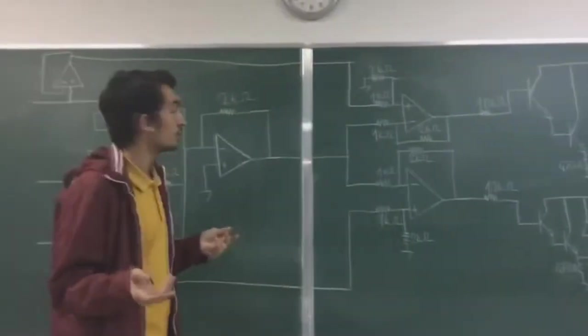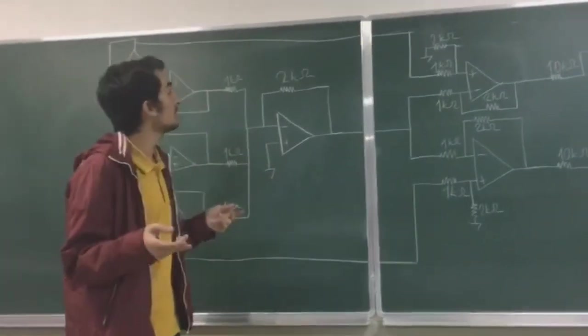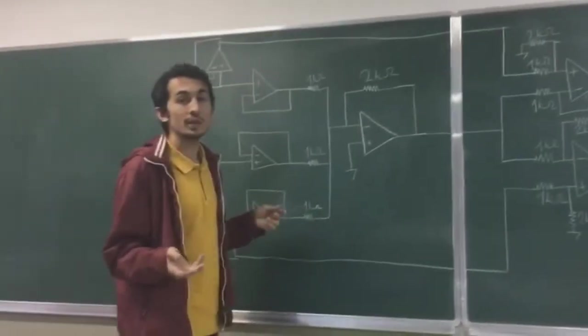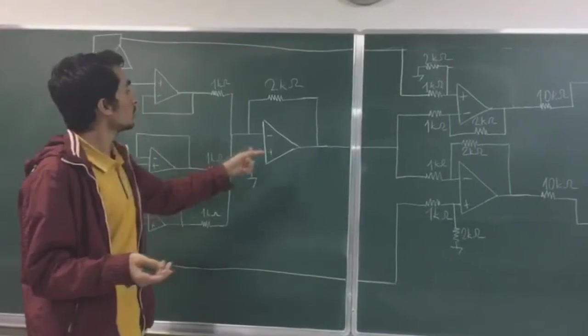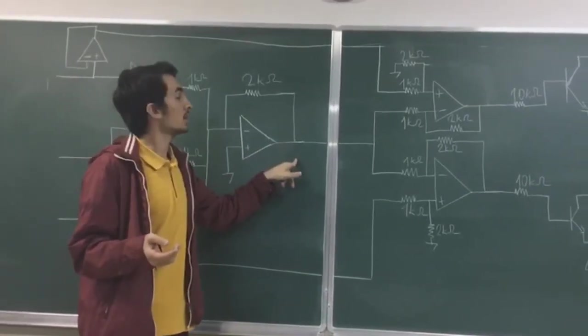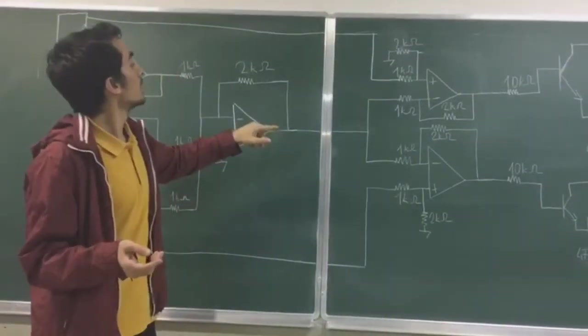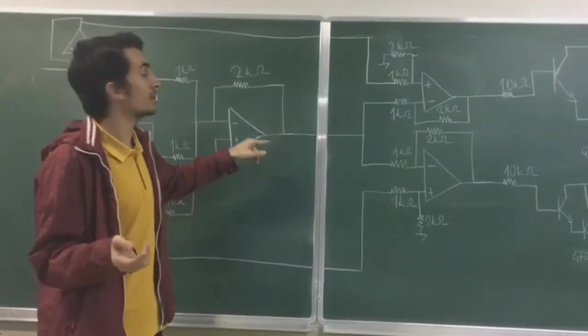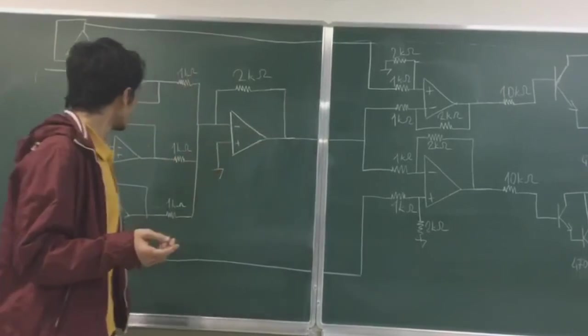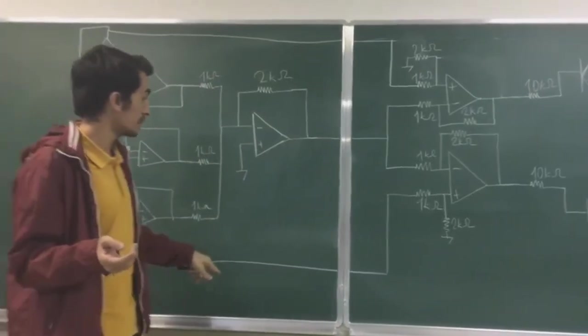Let's analyze the circuit for 3 different cases. Let's assume that turn left command is given. If turn left command is given, output of the summing amplifier will give a negative voltage and its magnitude will be greater than the output of the left filter. The output of the right filter will be 0.